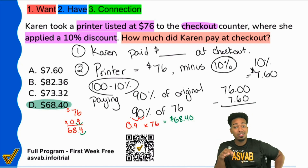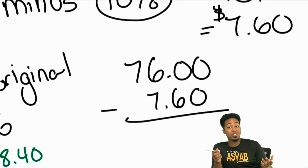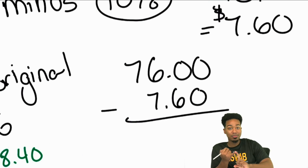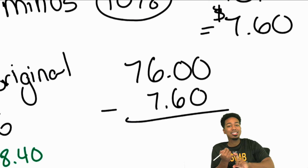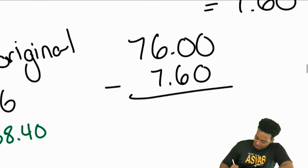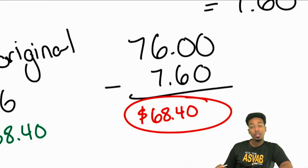All you have to do is take $76 and subtract $7.60. If you want to do this with mental math, it's pretty easy. Subtract 7 first: 76 minus 7 is 69. Then $69 minus 60 cents is $68.40. With mental math, that makes things a lot easier.